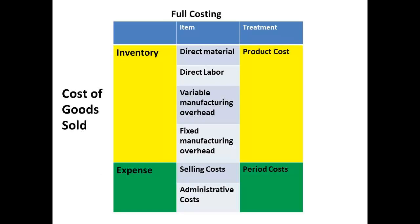Whichever method we use, the costs are those of direct materials, direct labour, variable manufacturing overhead, fixed manufacturing overhead, selling costs, and administrative costs. Remember that selling and administrative costs are treated as period costs. Until sold, these are treated as product costs. All product costs for goods not sold are regarded as inventory, whilst the period costs will be treated as expenses.